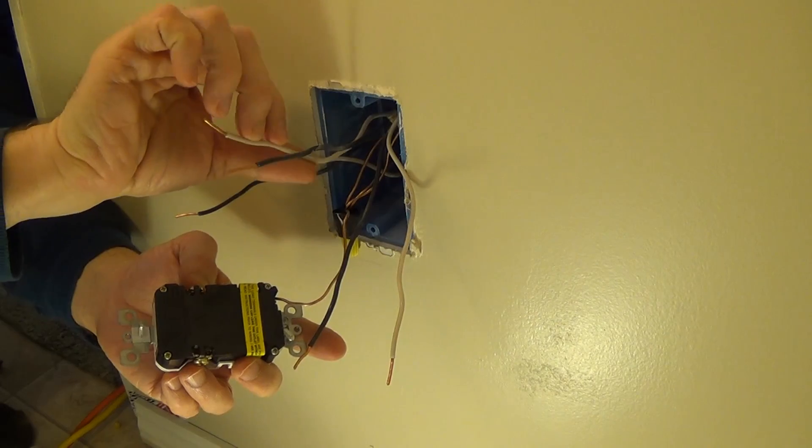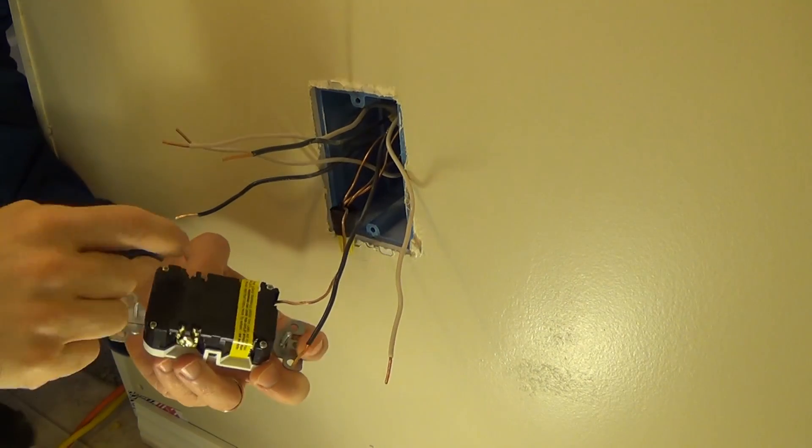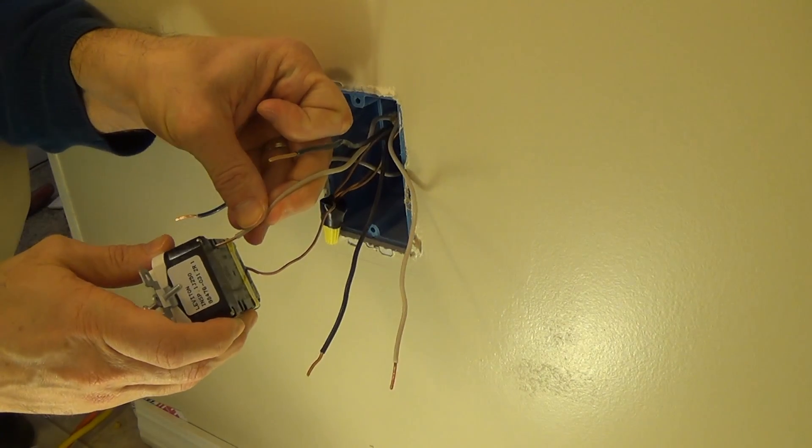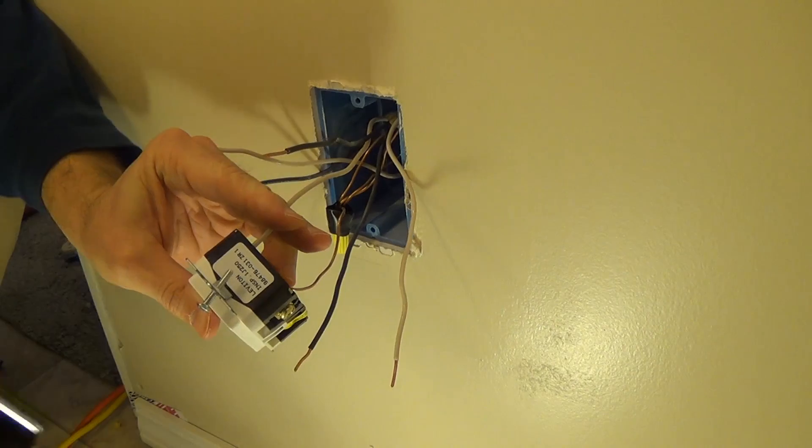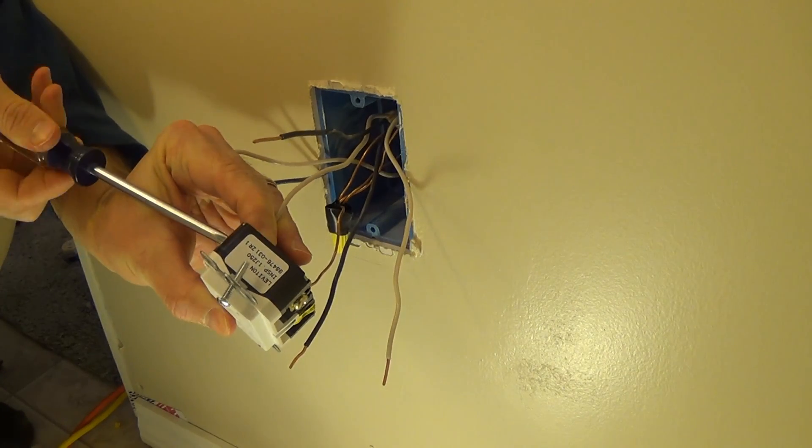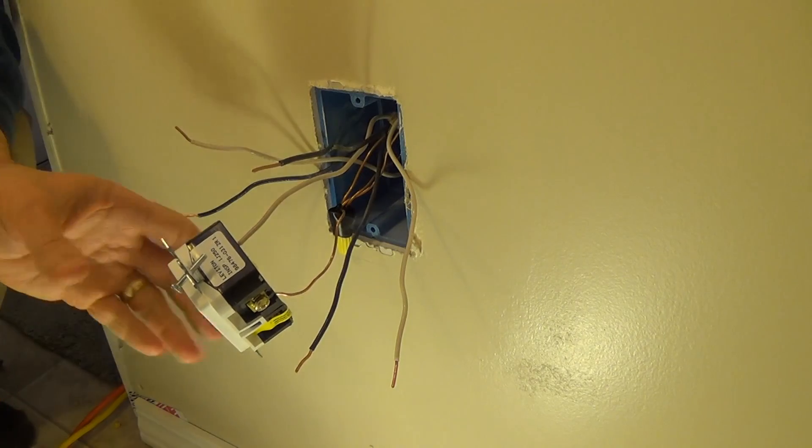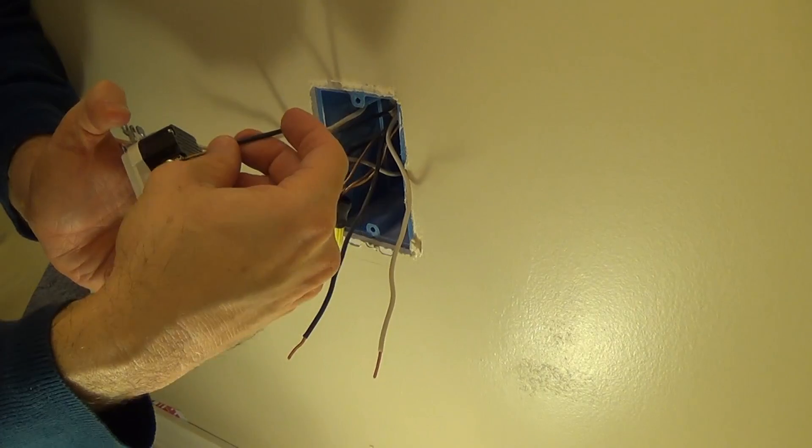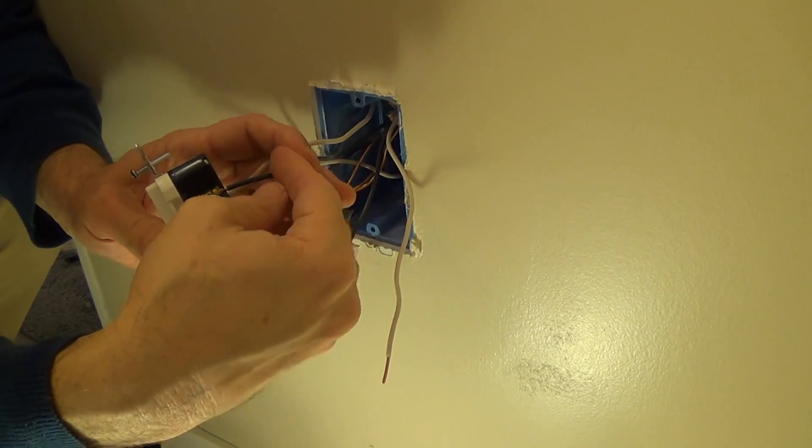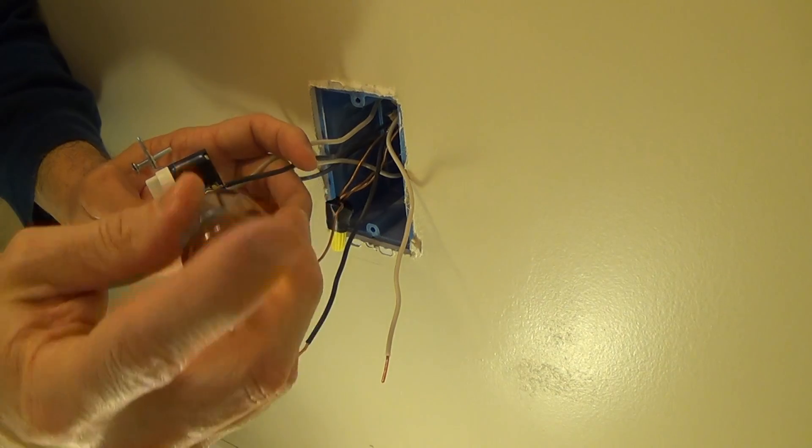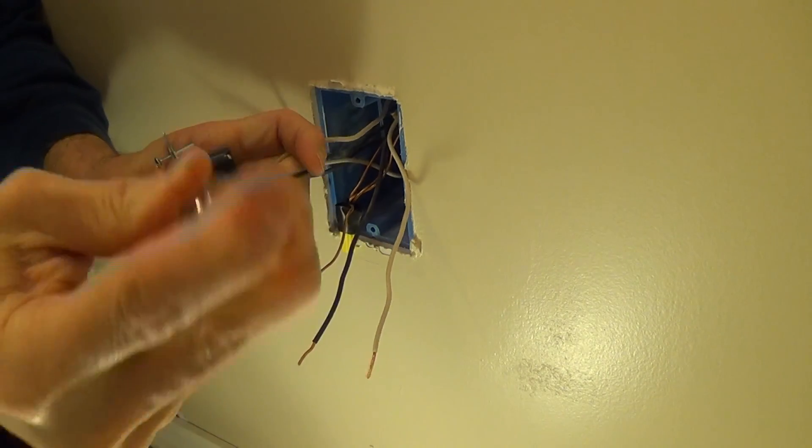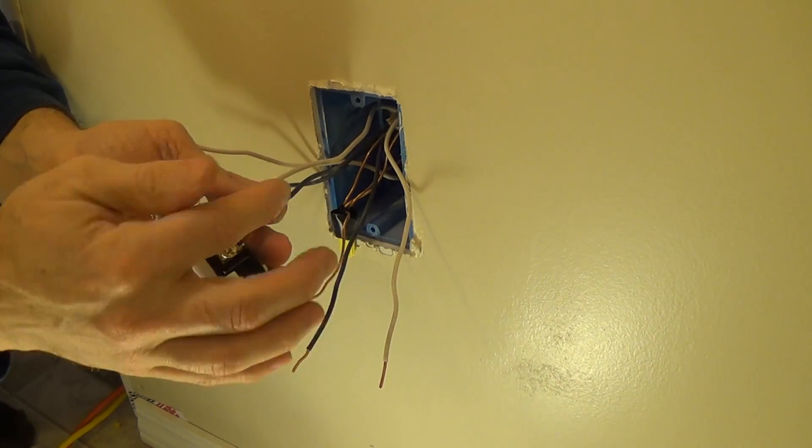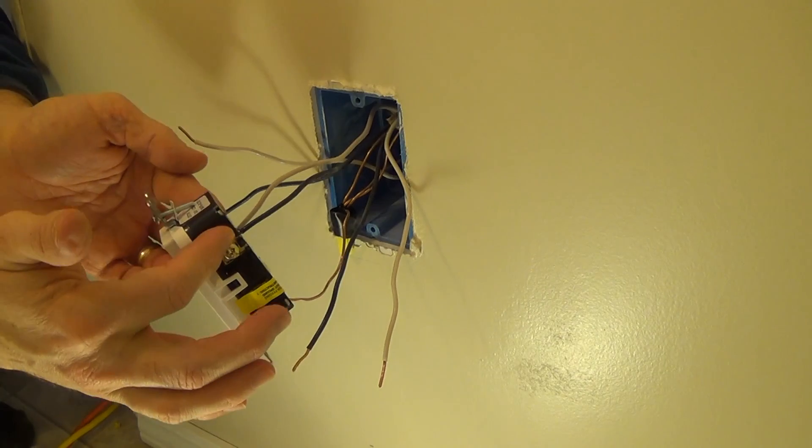So we're gonna go ahead and stick in the line load wires now. We have gold, silver, and both of them have little plates here. So we're gonna go underneath and connect the white wire like that. And then we're gonna go underneath this plate and then secure the black wire to the gold terminal just like that. So we know that the hot wires, the line wires, are connected in their proper location.